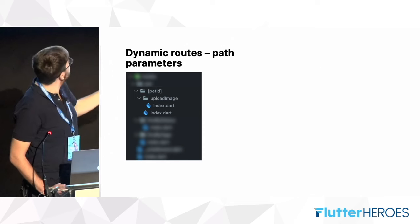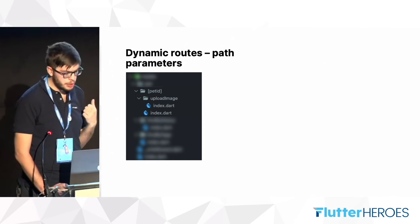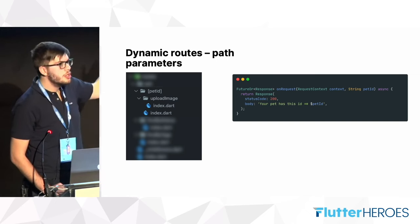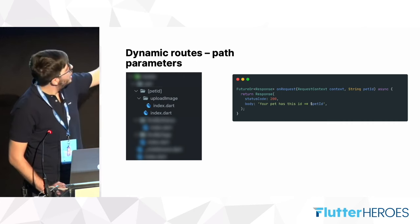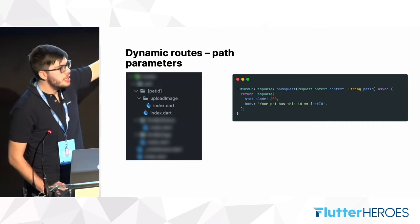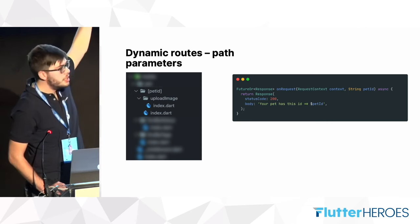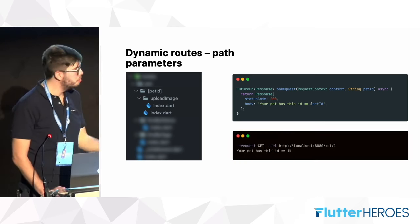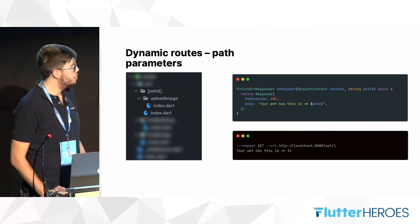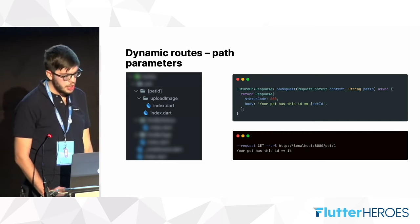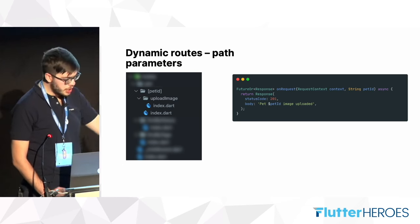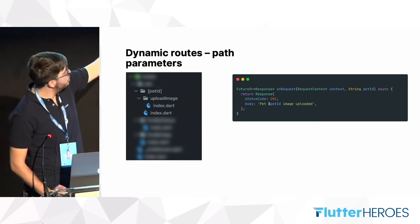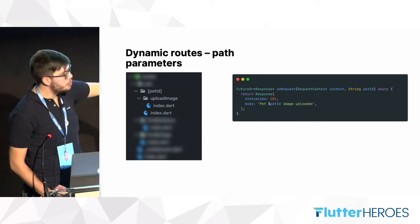If we look at the index.dart file of the path ID folder, we can see it takes the request context as always, plus a new parameter — the path ID — which is exactly the parameter defined on the folder name. We can use it to serve the request, handle queries, and so on. All subtree handlers inside the dynamic route also receive the path ID parameter as input.